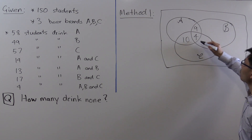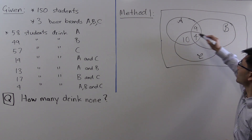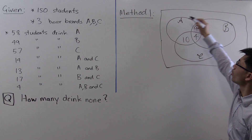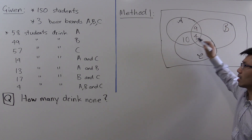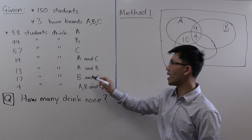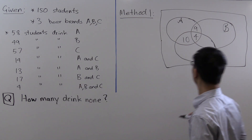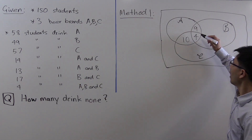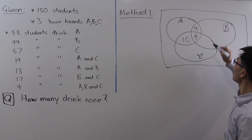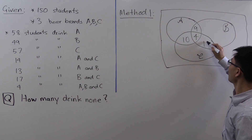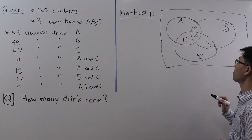In the region for those that drink B and C but not A: there are 17 students who drink B and C. Subtracting the 4 that also drink A leaves 13 remaining. So we put 13 there.